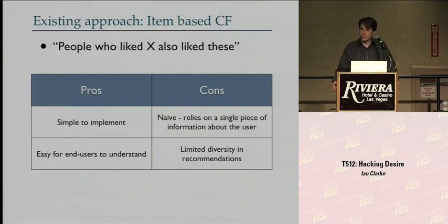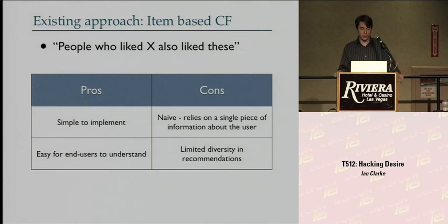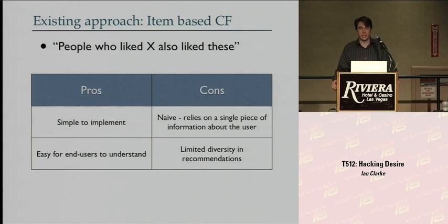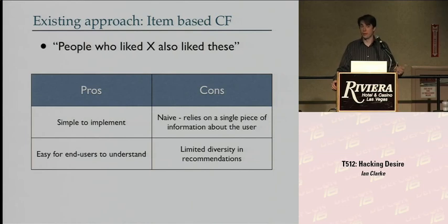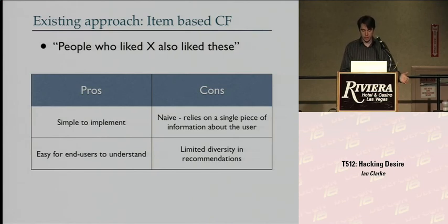On the negative side, it's quite naive. Really the only input to this algorithm is what item are you looking at right now — that's all it knows about you when it makes its recommendations. There also tends to be a problem with limited diversity. When this technique is applied to news stories, if you have a story about the war in Iraq, it will recommend a bunch of other news stories on the same topics. That's typically not what people want — people want some degree of diversity, especially when reading news or listening to music.